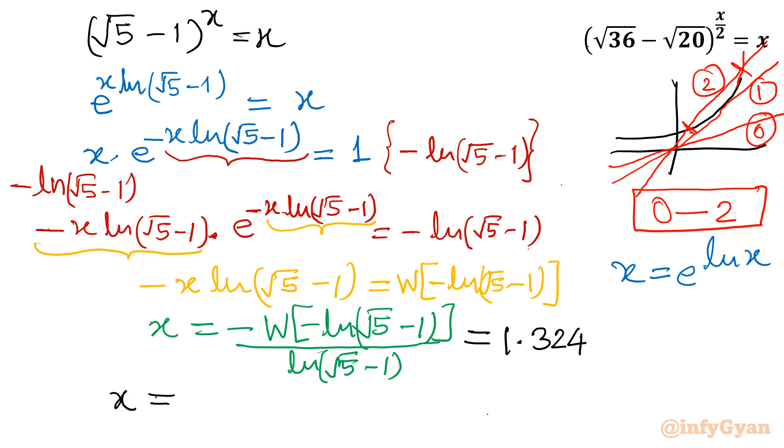And if I have to find out from the second branch, then from W of minus 1, then I will get this value and this value is coming out 11.541.